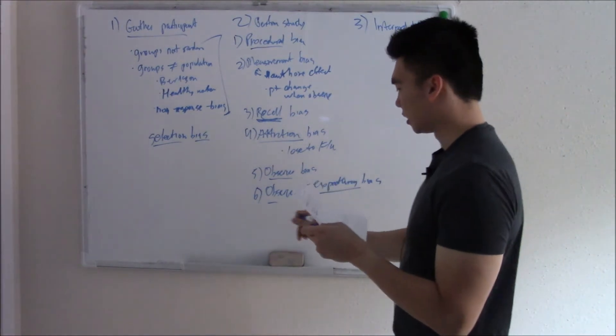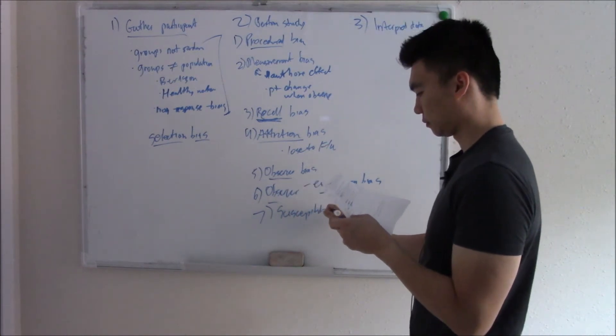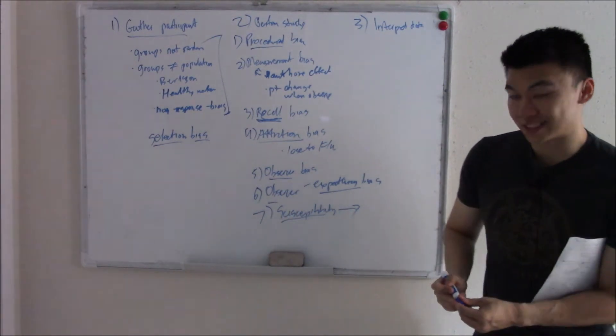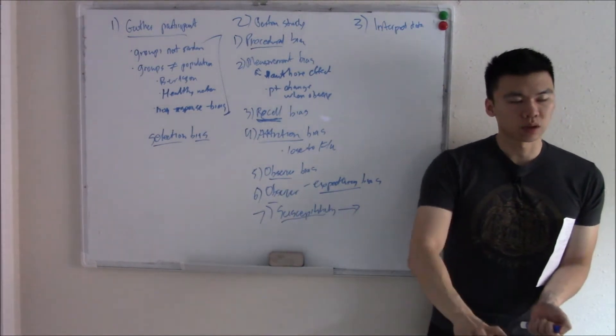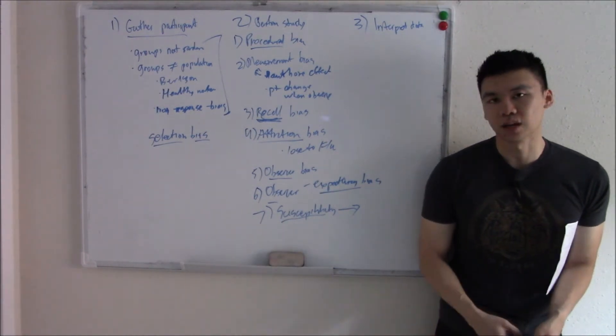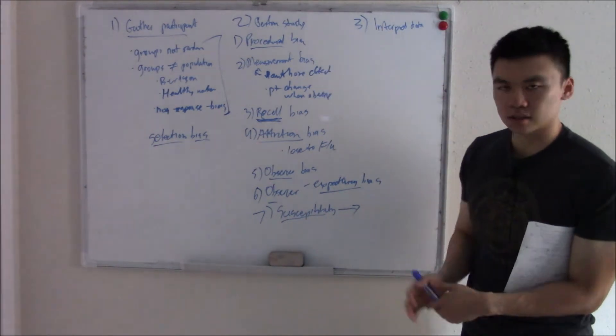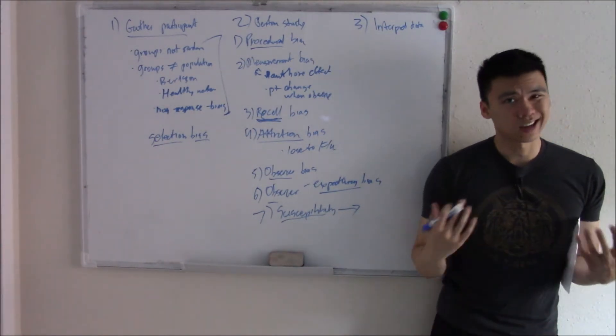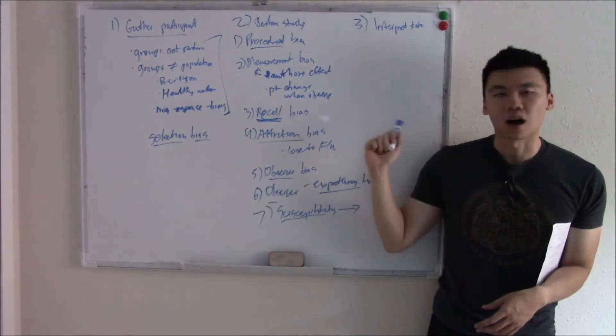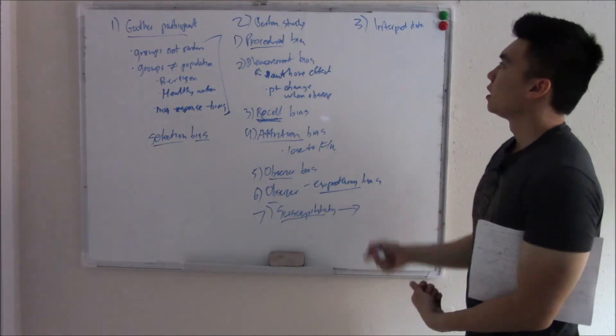And our last one we're going to talk about is susceptibility bias. People that are more susceptible to disease, people that are sicker. If you give these people that are sicker a little bit extra medication, that can affect your results. Susceptibility bias. So hopefully you can see, by now, the name really gives it away. If you're ever stuck, if they ever give you an example on the test and you're not quite sure, look at the answer choices, look at the name, and oftentimes the name can help guide you.